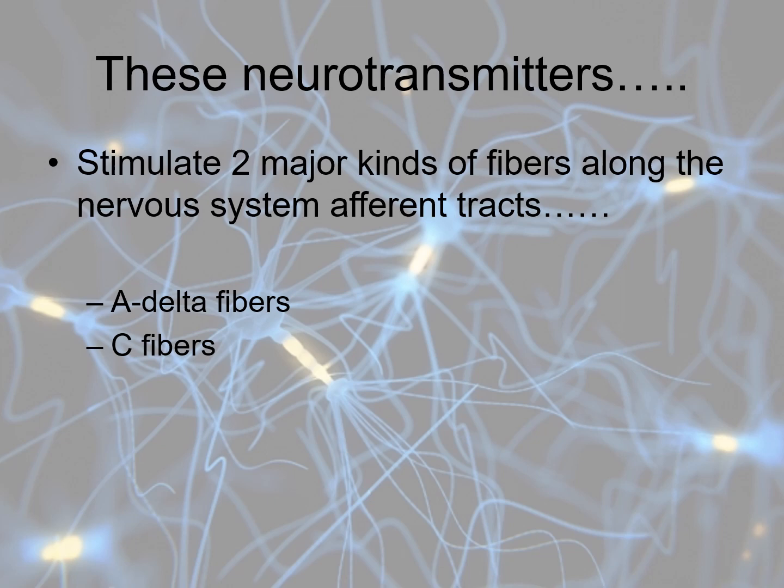Those neurotransmitters then stimulate two major kinds of fibers: the A-delta fibers and the C fibers. The A-delta fibers are for acute pain; the C fibers are more for chronic pain. When someone has acute pain and the A-delta fibers are stimulated, you get a sympathetic response — increased pulse rate, sweating, a classic response. When someone has chronic pain and the C fibers are stimulated, you won't have any of those responses, which is why a patient with chronic pain may not look uncomfortable but may in fact be in substantial pain.